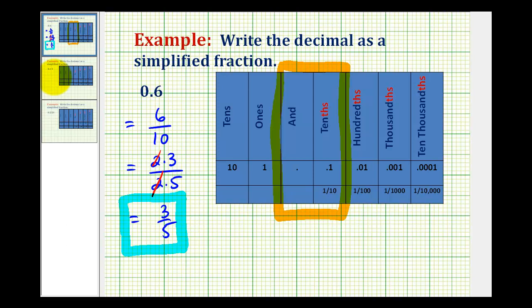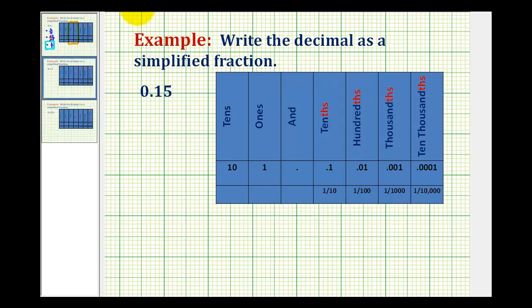Let's take a look at another example. Notice here we have two digits to the right of the decimal. So we'll be looking at this part of the place value chart. So if we read this decimal, this would be fifteen hundredths,